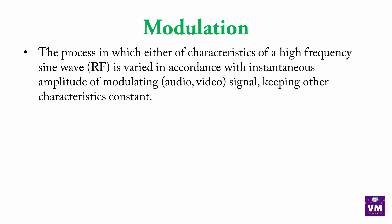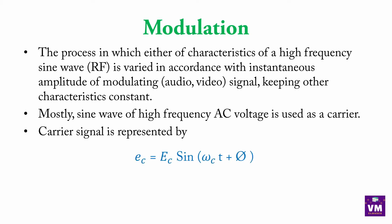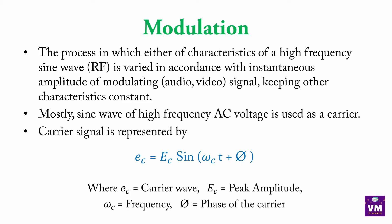Modulation means: whatever signal we need to transfer — audio or video — we modulate its amplitude and use a carrier wave. The carrier signal is represented by small e_c, equal to capital E_C sin(ωCt + φ), where E_C is the peak amplitude of the carrier wave, ωC is the frequency (ωC = 2πF), and φ is the phase of the carrier.